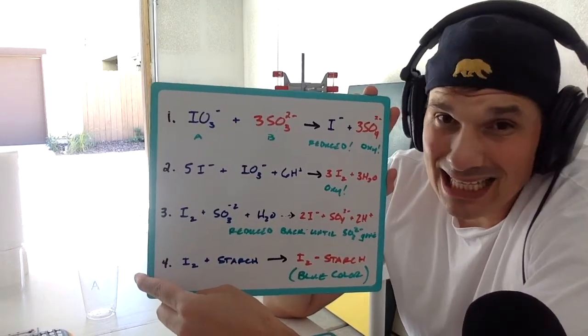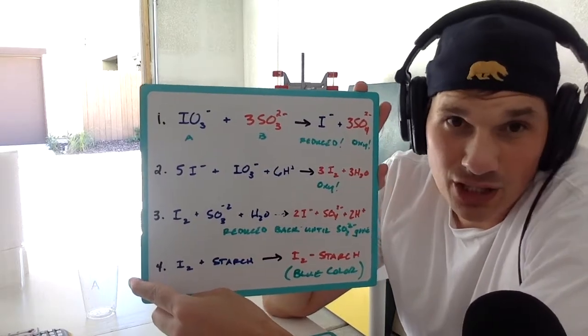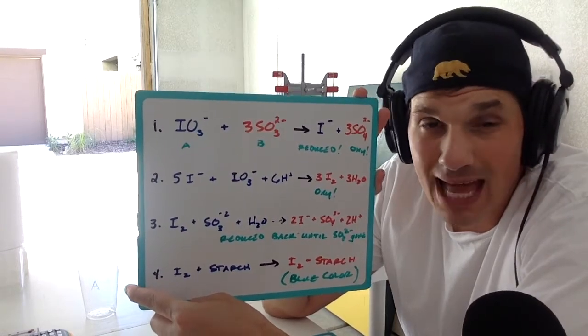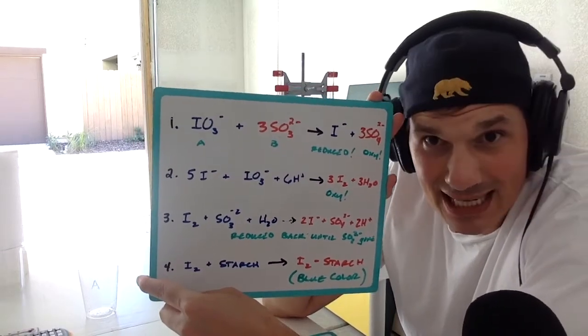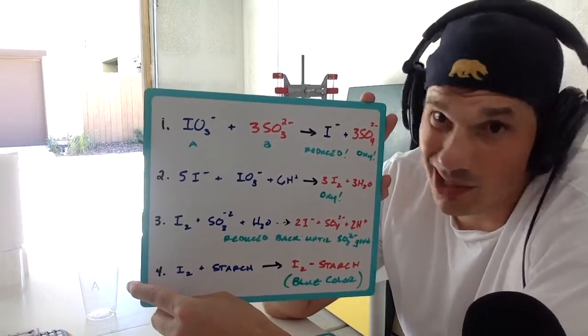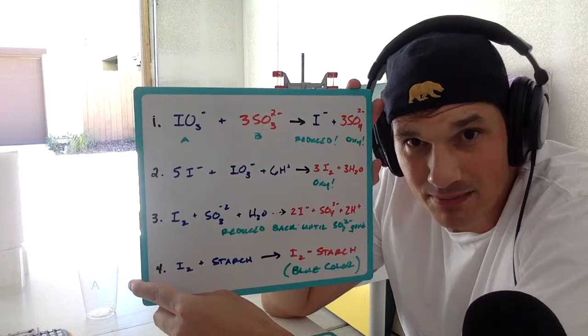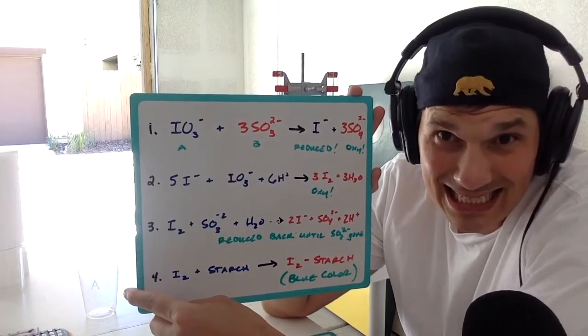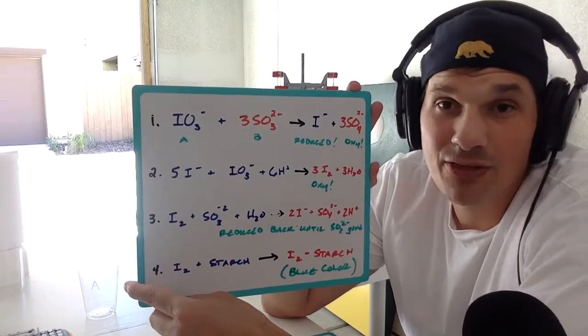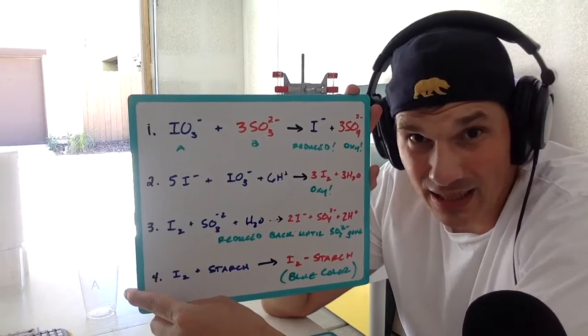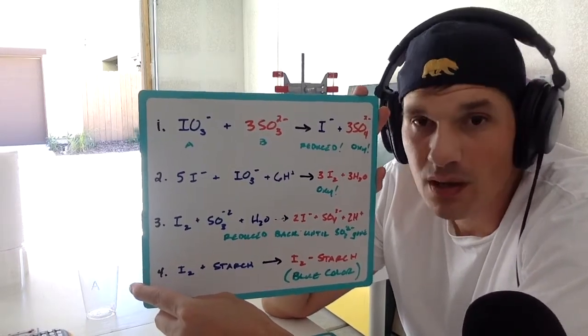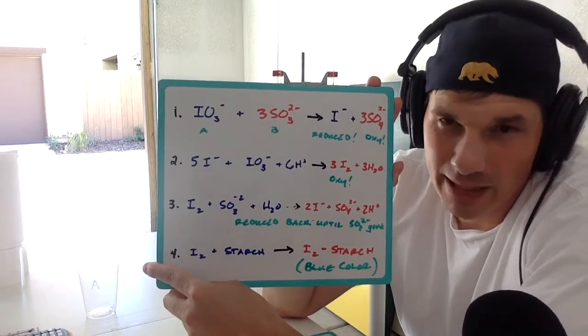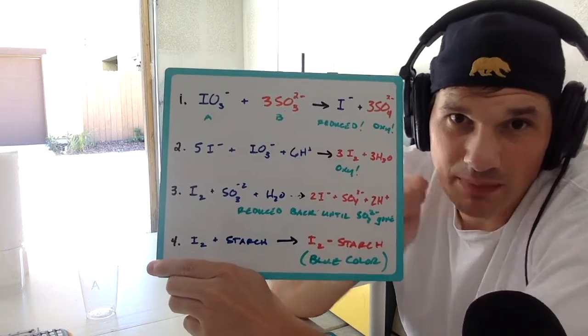Now, the second thing that happens is we have a bunch of iodides in the solution. They react with the acid from the citric acid - that's where that H+ comes from - and the remainder of the iodates from solution A. Remember, this is all in one solution now. Lo and behold, the acid oxidizes the iodate into iodide, and those two iodides form iodine, that I2. Because iodine is part of Brinkelhoff, it's a diatomic molecule. And that's where that H2O comes in.